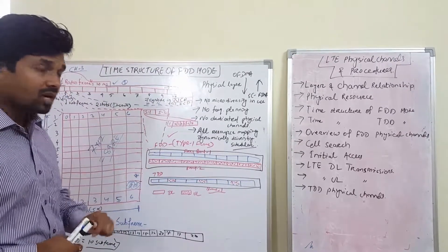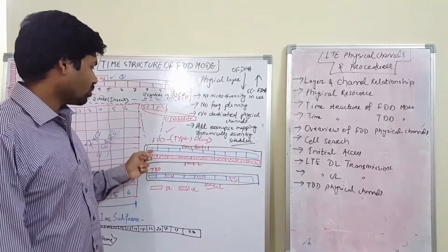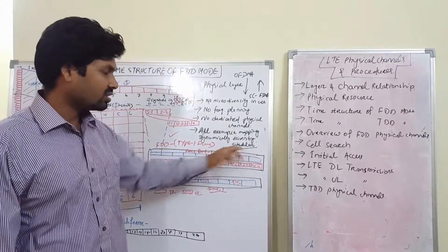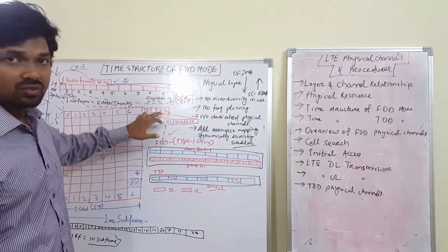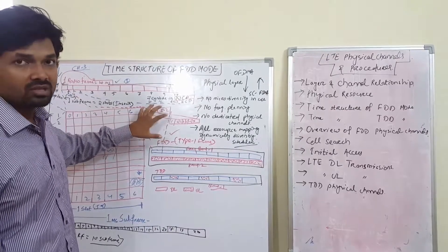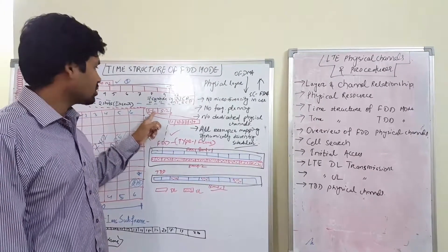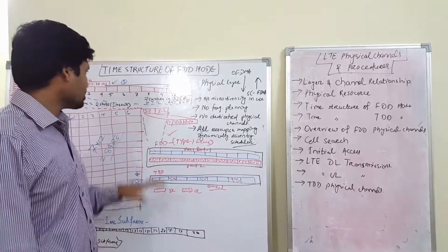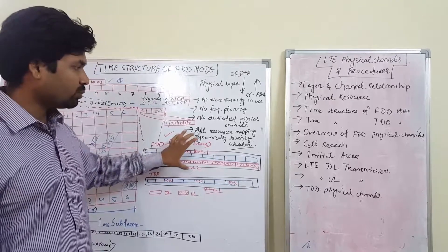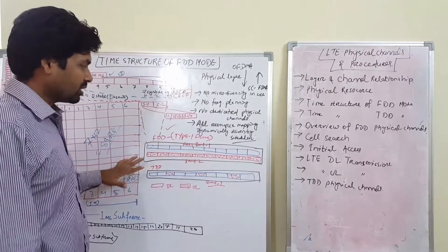Focusing on the FDD part, we have two separate bands for uplink and downlink. One radio frame consists of ten sub frames — sub frames 0 through 9. Each sub frame has two slots, each 0.5 ms, making one sub frame equal to 1 ms. Each slot is divided into seven symbols when using normal cyclic prefix.